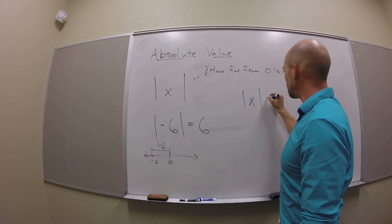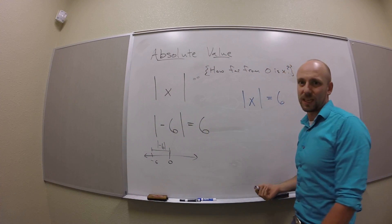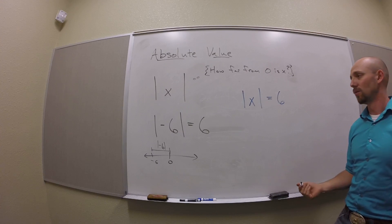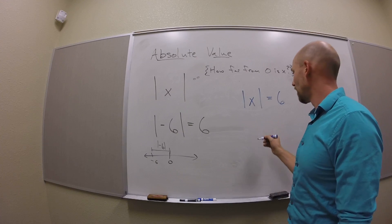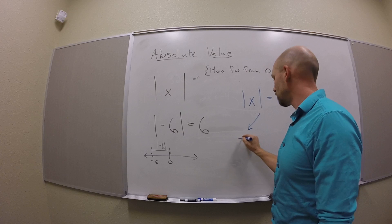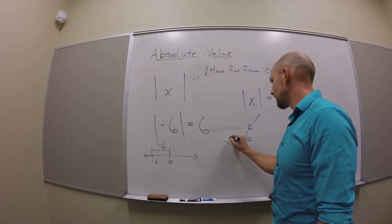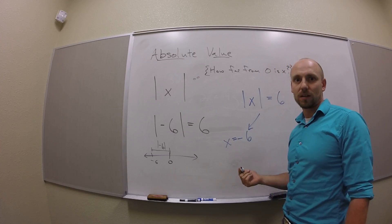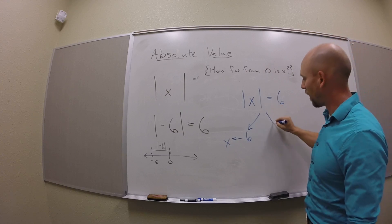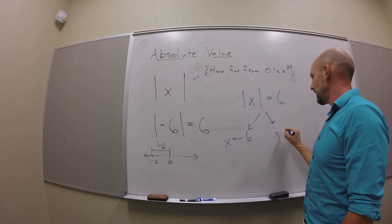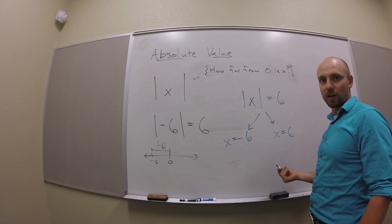But what if I knew that the absolute value of x was 6? What are my options? Well, one of them I just found out. So an option is that x is negative 6. The other option is that x is 6.